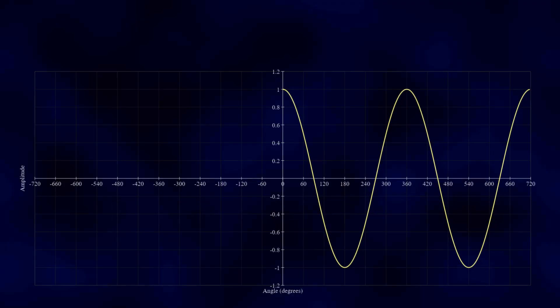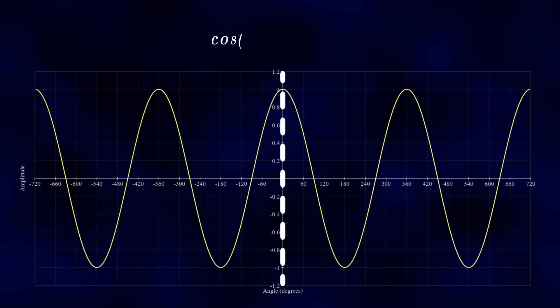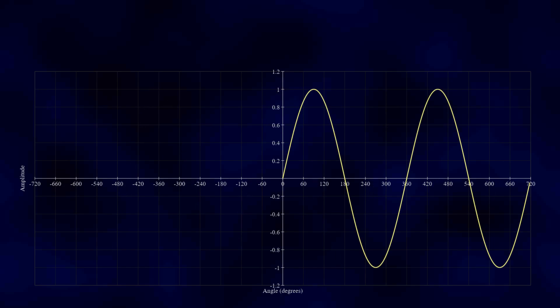A cosine wave is an even function. This means that its values are symmetric around the y-axis. To put it mathematically, we can say that the cosine of minus theta is equal to the cosine of theta. A sine wave, on the other hand, is an odd function.